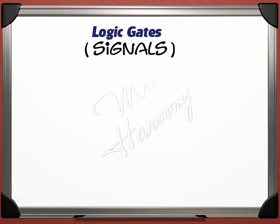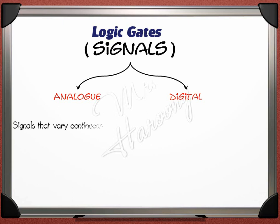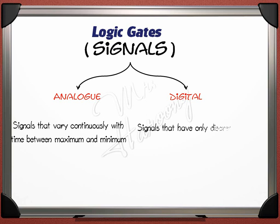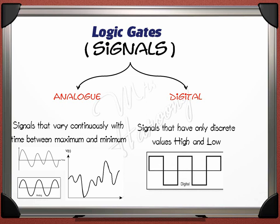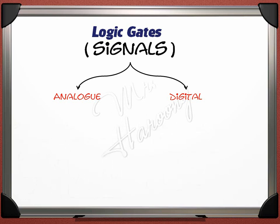The signal or voltage in both purposes can be either analog or digital. Analog signals are signals that vary continuously with time between a maximum and a minimum. Digital signals are those that have only discrete values — high and low. These are graphical representations of analog signals, showing the smooth change in voltage with time. The digital signal graph shows the sudden change of voltage from high to low with no smooth transition.